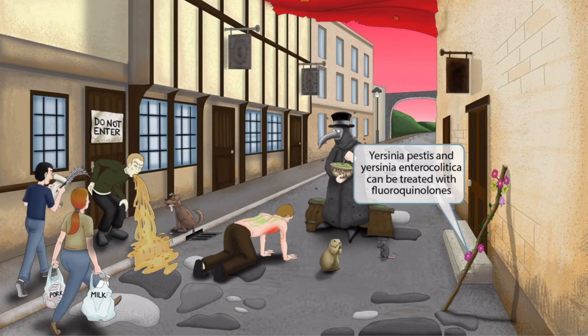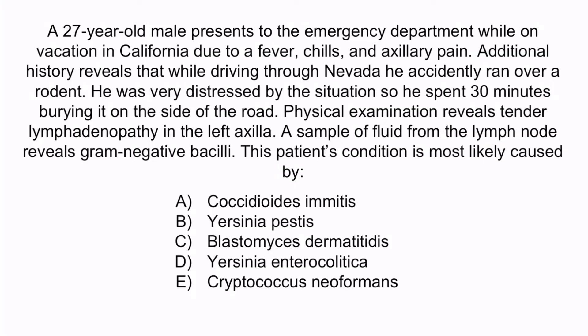Now that we've covered the image, let's review with a question. A 27-year-old male presents to the emergency department while on vacation in California due to a fever, chills, and axillary pain. Additional history reveals that while driving through Nevada, he accidentally ran over a rodent and spent 30 minutes burying it on the side of the road. Physical examination reveals tender lymphadenopathy in the left axilla. A sample of fluid from the lymph node reveals gram-negative bacilli. This patient's condition is most likely caused by: A. Coccidioides imitis, B. Yersinia pestis, C. Blastomyces dermatitidis, D. Yersinia enterocolitica, or E. Cryptococcus neoformans.